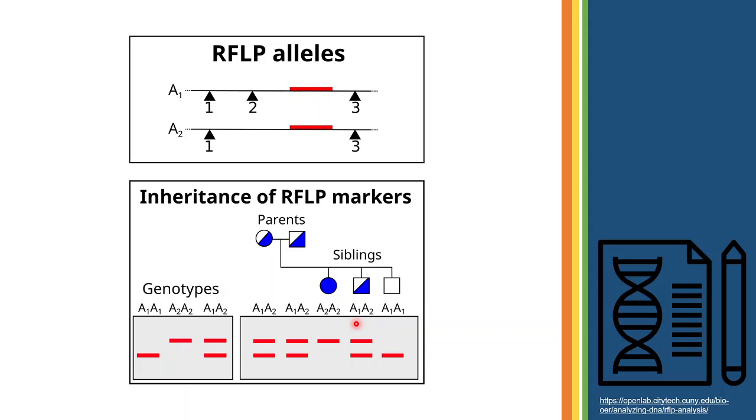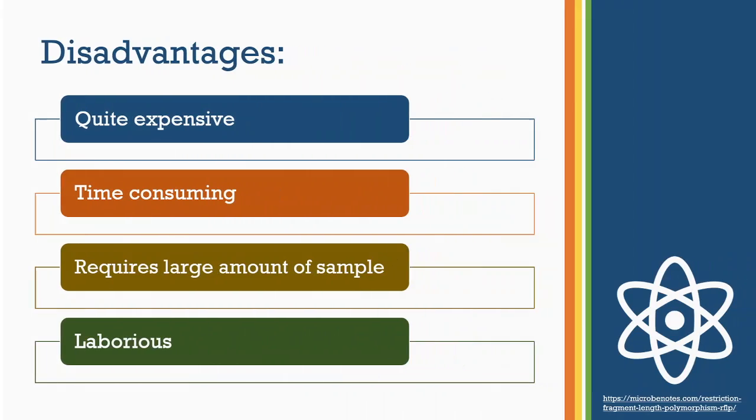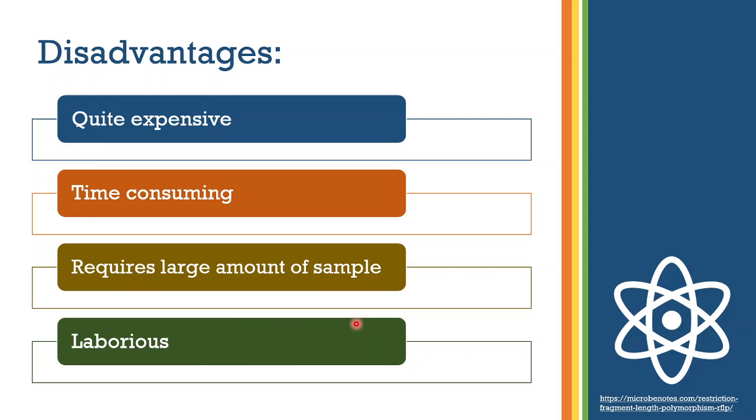As every coin has two sides, this technique also has its own limitations and disadvantages. The technique was developed back in the 20th century and technology has developed a lot after that. RFLP analysis is quite expensive as compared to the techniques we have now. It takes days or even weeks at time to get the results and thus we can call it pretty time consuming.